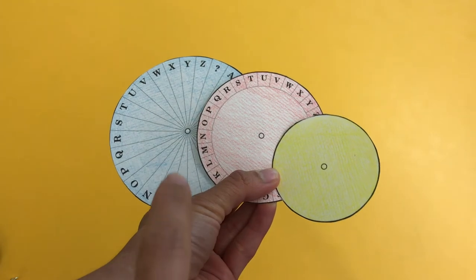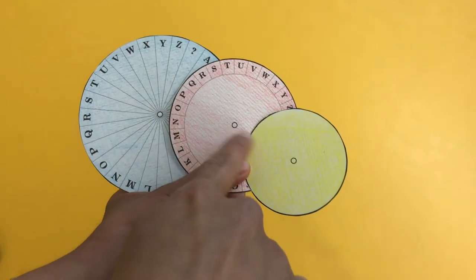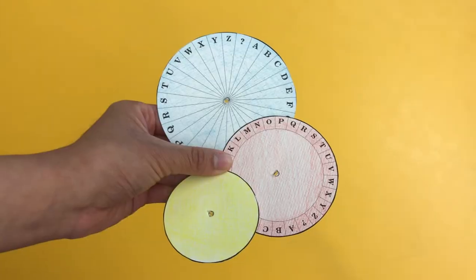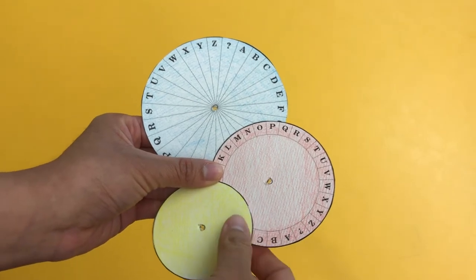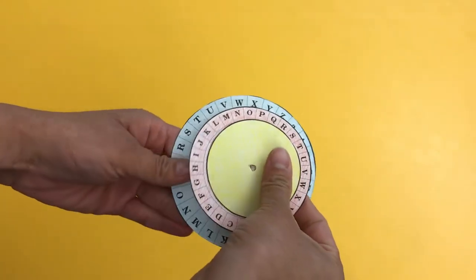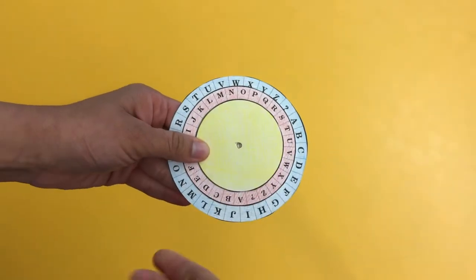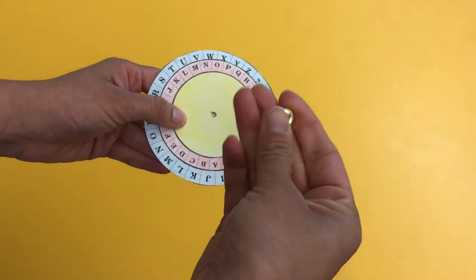Poke a hole in the middle of each wheel using scissors. Then line up the holes in the middle of each wheel and fasten them together using a brad.